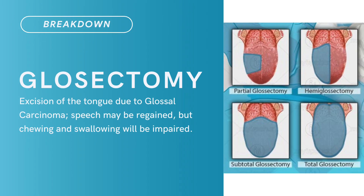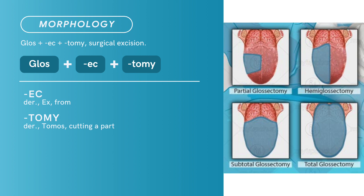Compound term: glossectomy. Brief definition: excision of the tongue due to glossal carcinoma. Speech may be regained, but chewing and swallowing will be impaired. Term morphology: compound of gloss plus ectomy, literally meaning surgical excision of the tongue.